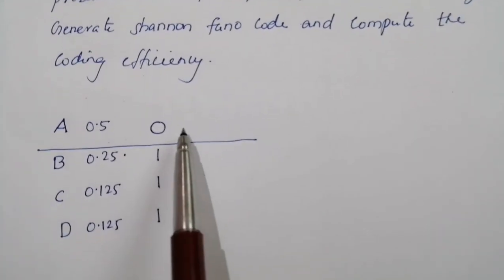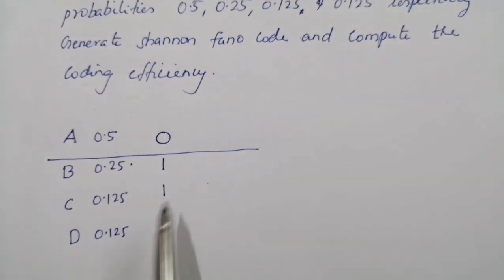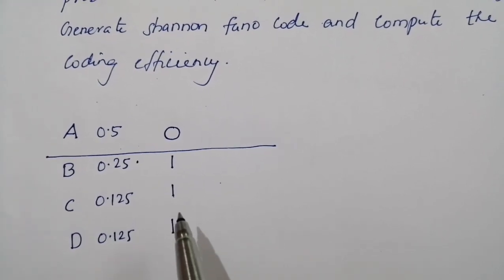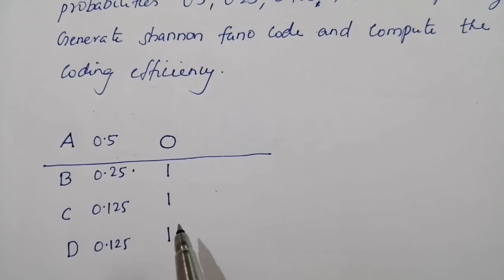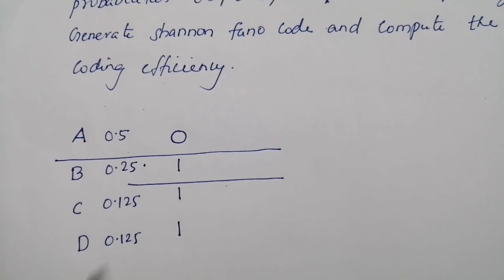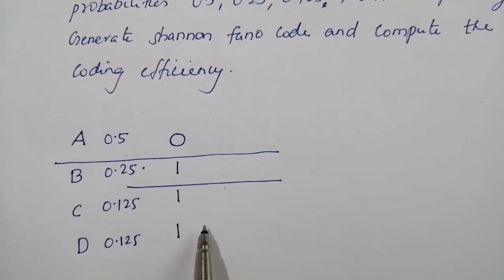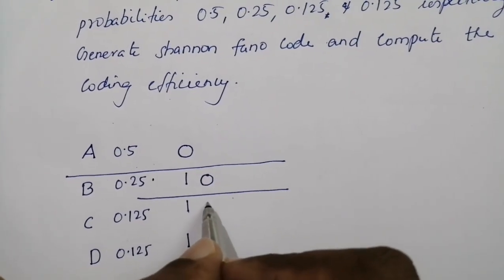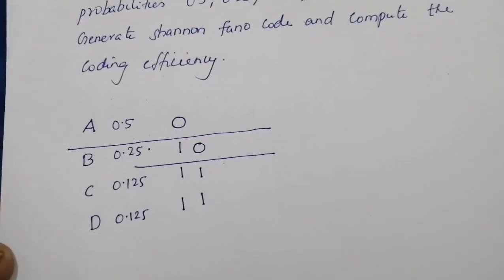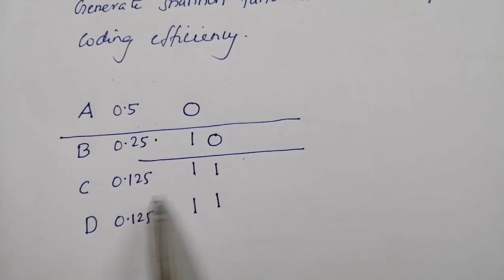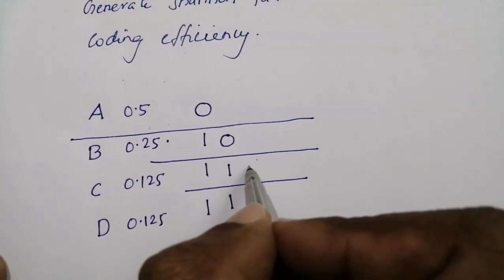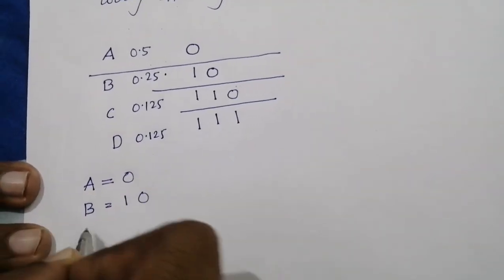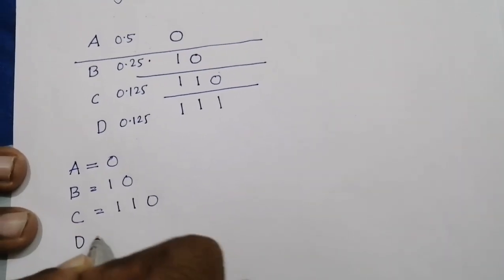In the first subgroup we have only one symbol, so no further grouping is needed. In the second group we have three symbols B, C, D, so we divide it by drawing a line such that the probability above the line almost equals the probability below the line. The subgroup above has probability 0.25 (symbol B), so assign 0 above the line and 1 below. Again divide C and D, assigning 0 to C and 1 to D. The resulting codewords are: A = 0, B = 10, C = 110, D = 111.